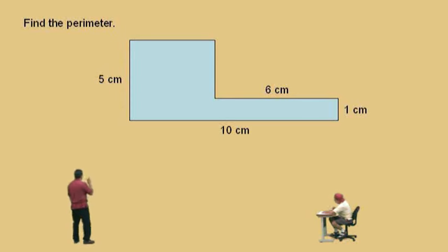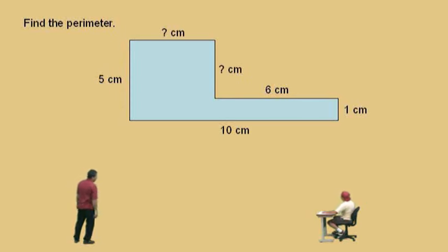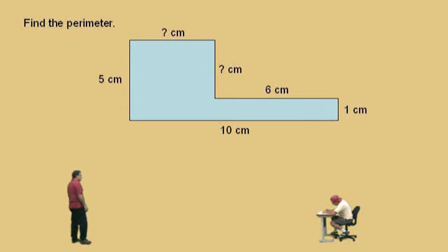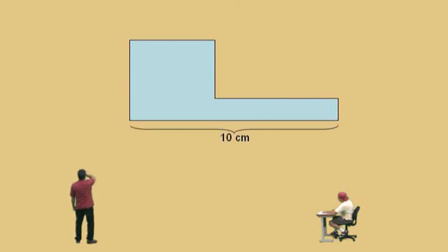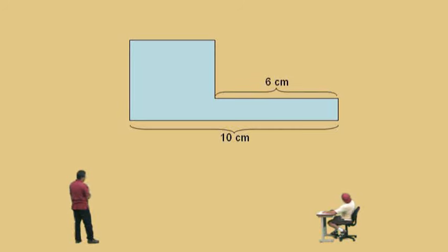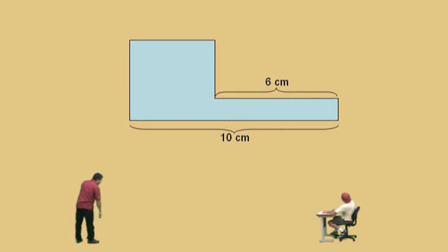We don't know that side length, and we don't know that top one up there. So we have to find those. What we're going to do is first look at our horizontal lengths only. Horizontal means this way. We know that's 10 right there, and that step there is 6. Pay attention Charlie, watch — I'm going to walk you through this one.